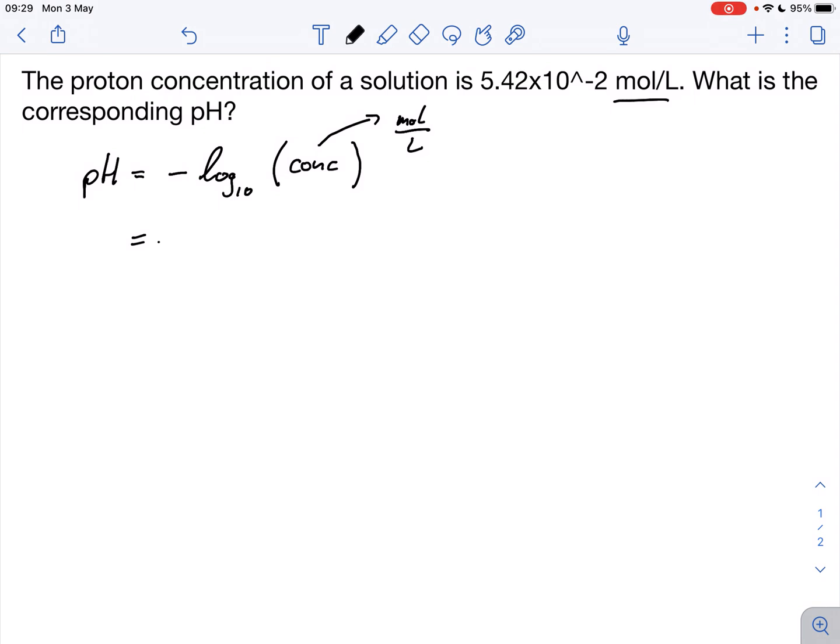So pH equals negative log to the base 10 of 5.42 times 10 to the minus 2. We usually don't use the unit here because we can't form the log of a unit, but we know that it is mole per liter or molar. When we put this into a calculator we get for the pH of